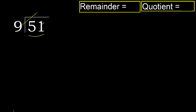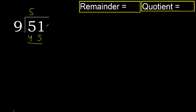9 multiplied by which number is nearest to 51 but not greater? 9 multiplied by 6 is 54, which is greater. Multiplied by 5 gives 45, which is not greater. Subtract.